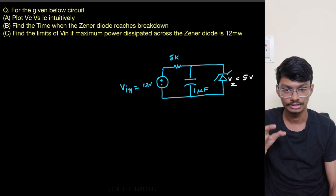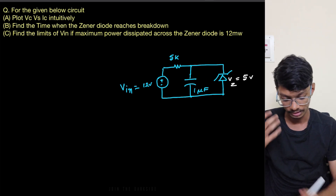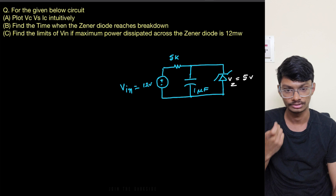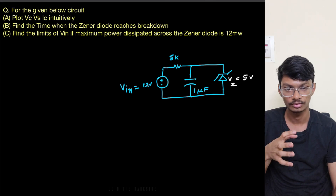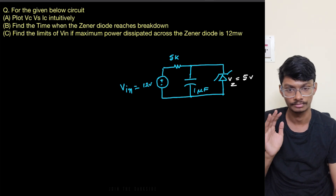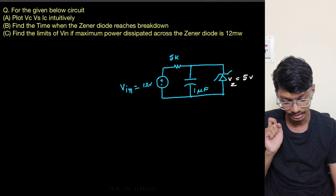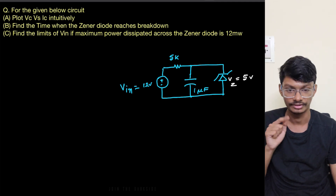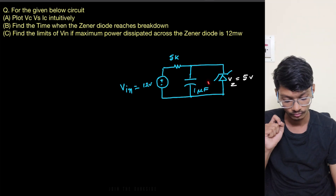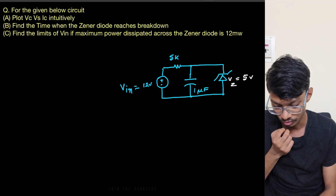First, let's understand what a Zener diode is. We operate the Zener diode at reverse bias and make use of the concept of Zener breakdown. Zener breakdown occurs around five volts, where the current changes by a very high amount but the voltage doesn't change that much. We make use of that concept.